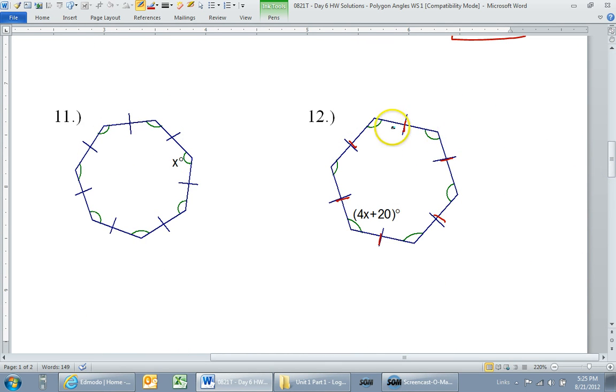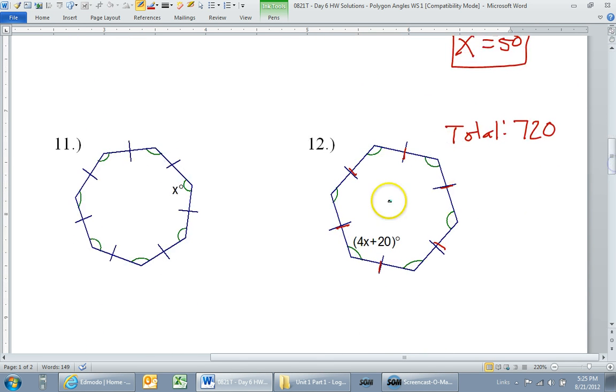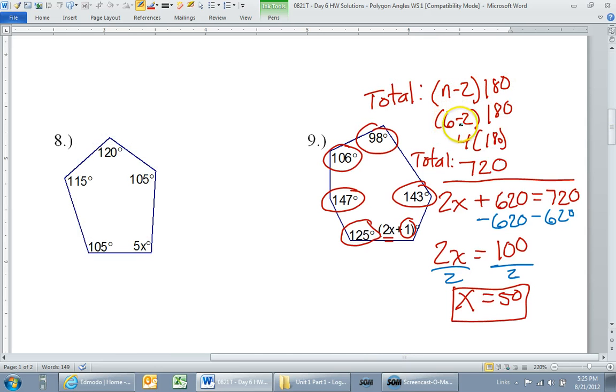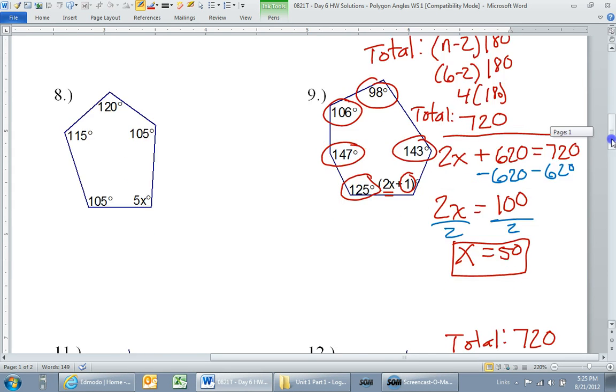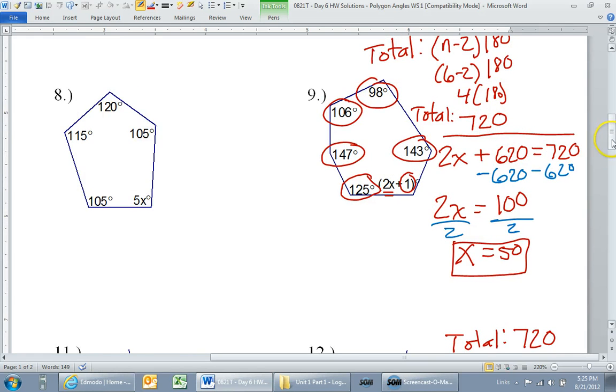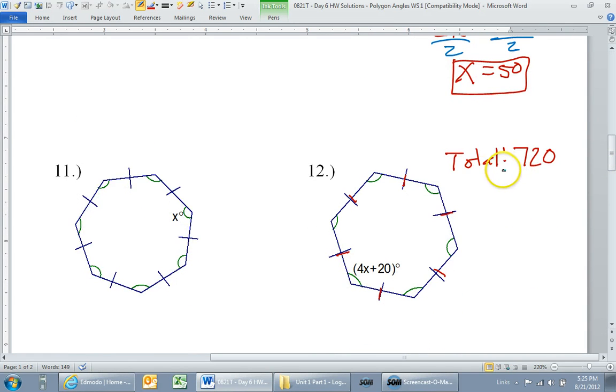So I know that the total is 720 inside. Now, if it had been a different shape other than a hexagon, then, you know, say if it had been an octagon, I would have done 8 minus 2 times 180. But it's a hexagon, and we just did it, so I know it's 720. That's the total.